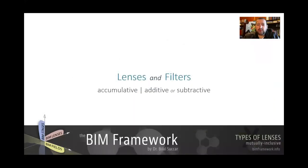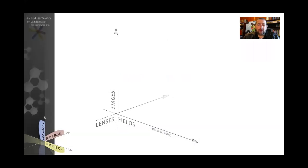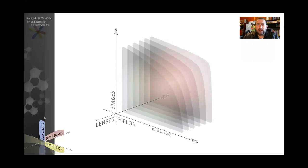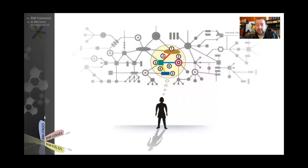Lenses and filters can be used individually — one lens or one filter applied to a field of observation — or they can be used together and accumulated. One lens can add to the one before it or can subtract from it. Visually, we've got stages and fields and we can add one lens, then another one, another one, until we really zoom in to exactly the topic we want to focus on, investigate, or test.